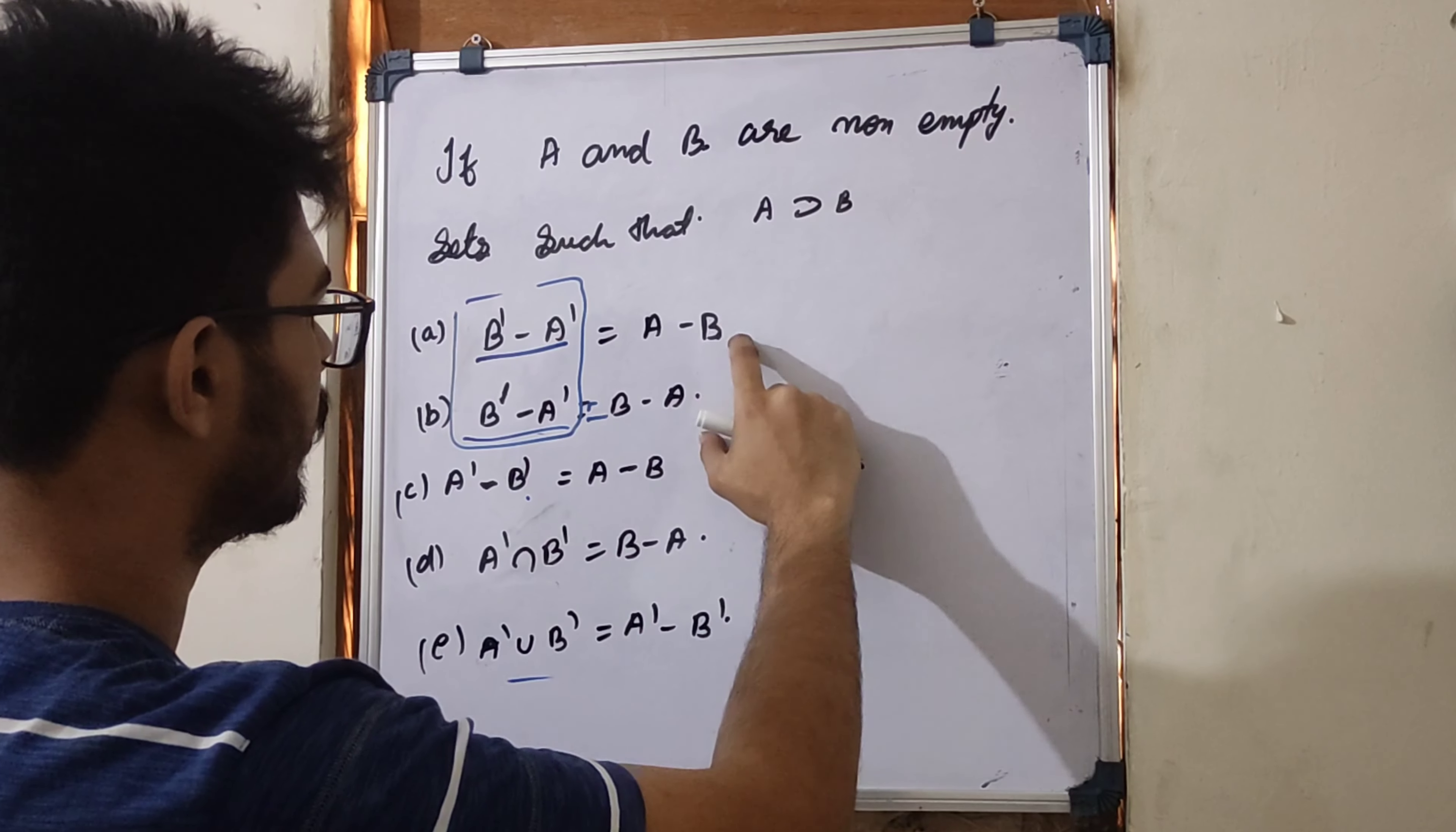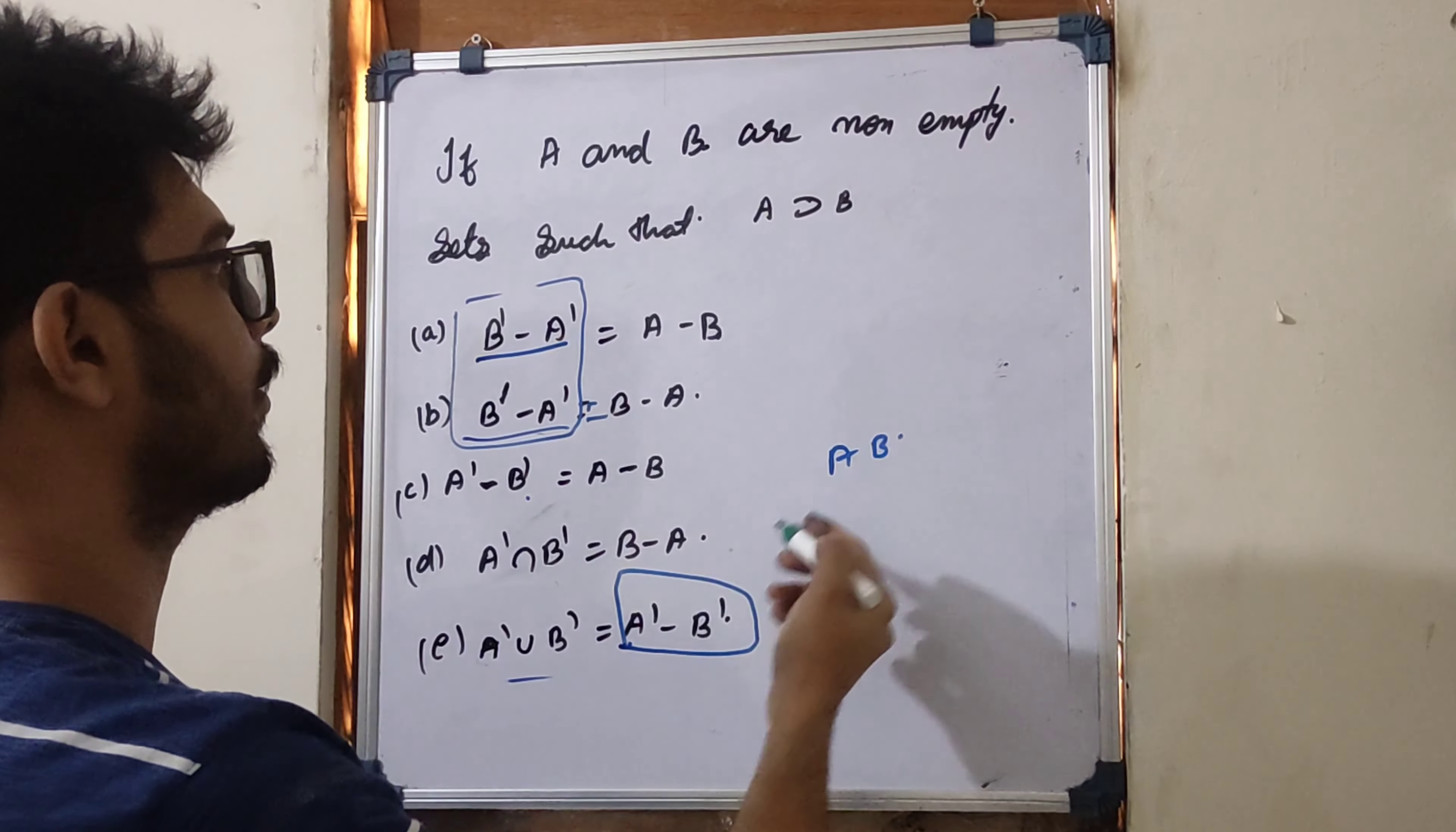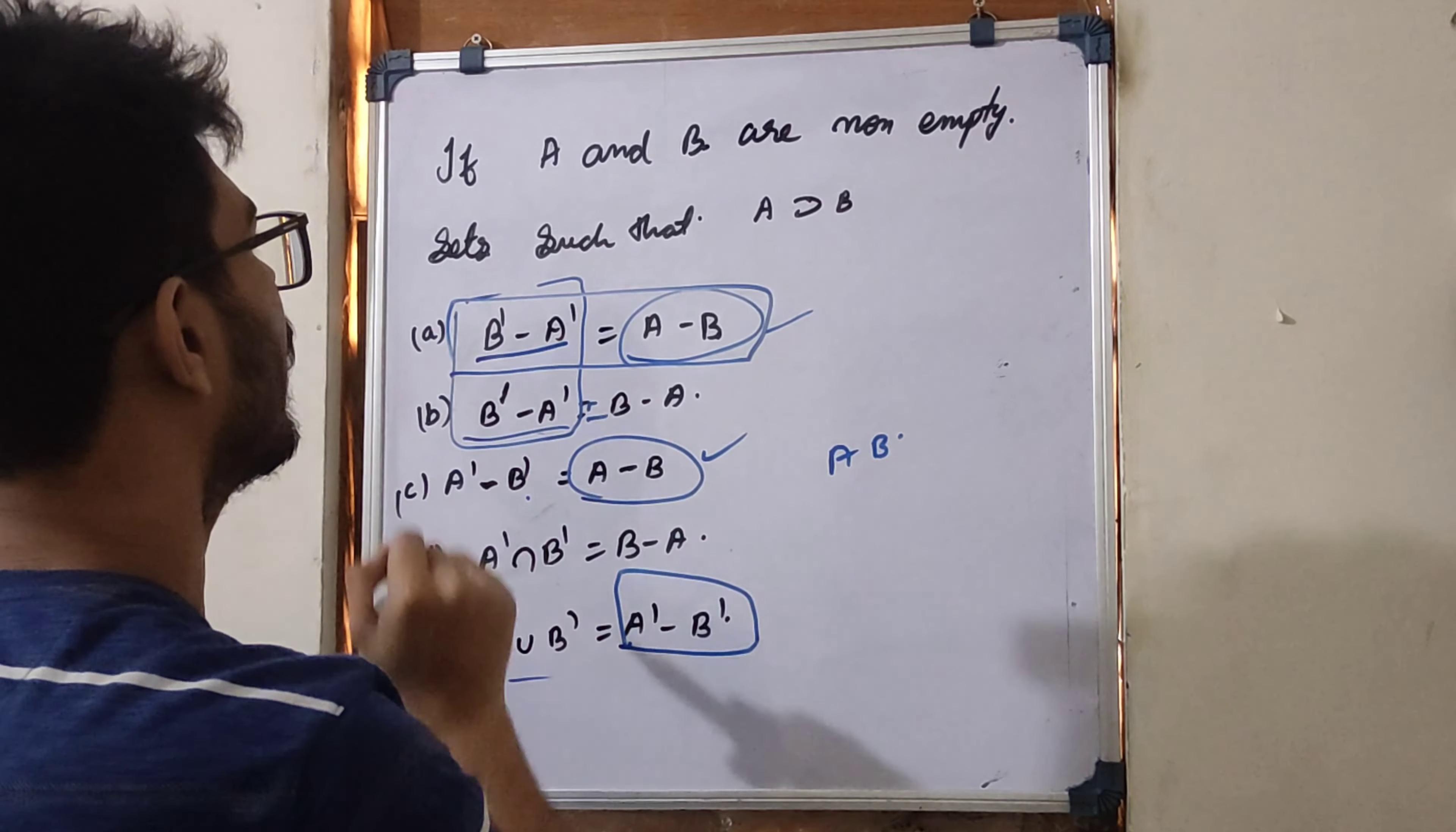Now we have A minus B, B minus A. But if we have a form of A minus B, then we have a different answer.